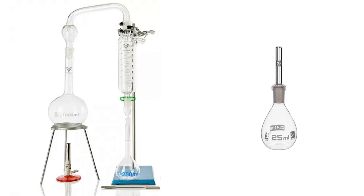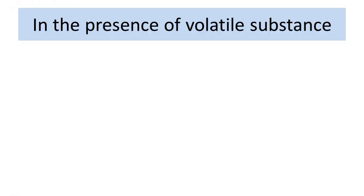This is the specific gravity bottle which is available and this is used to determine the viscosity or density. Weight per ml we can determine. We will be taking the empty specific gravity bottle. The formula for calculation I will show you later and we will be adding the first with water we will measure and then we will add whatever distillate is collected that we will add and then we will measure, we will take the weight of the specific gravity bottle.